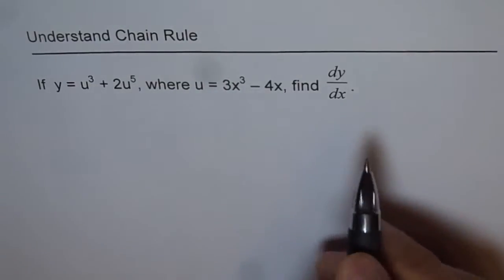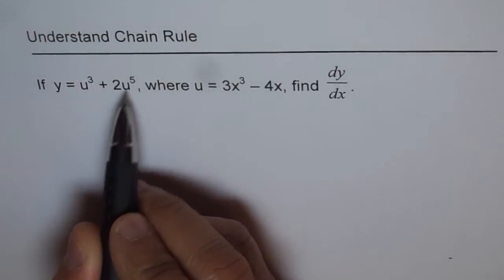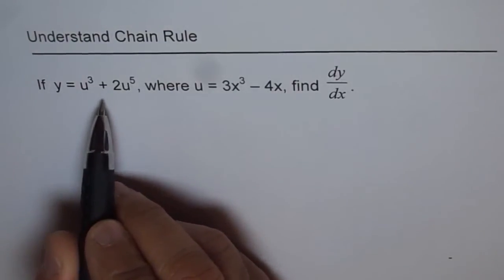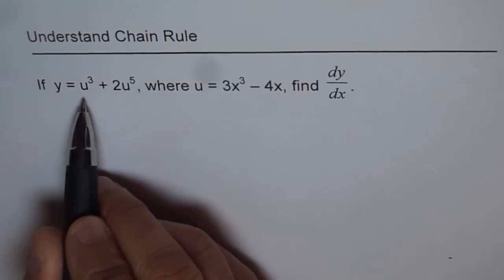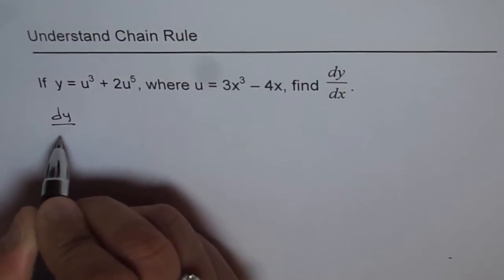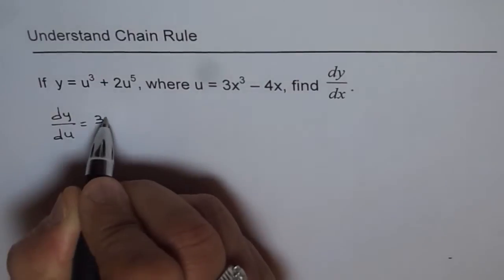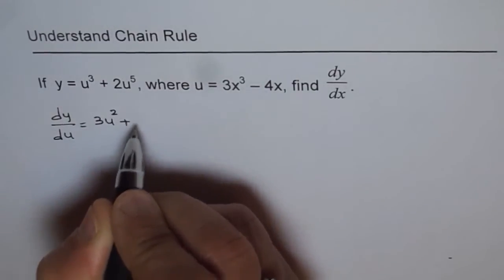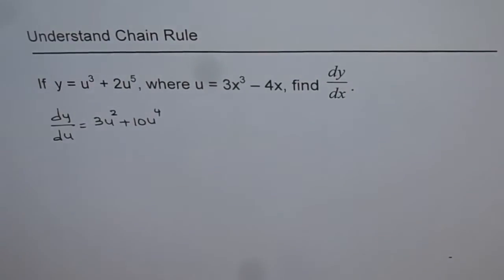First, when you are given y equals u cubed plus 2u to the power of 5, that means y is a function of u, so you can differentiate y with respect to u. Let's do that part first. We get dy over du equals 3u squared plus 10u to the power of 4. That is from power rule.